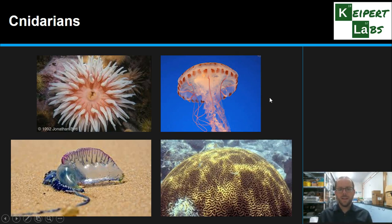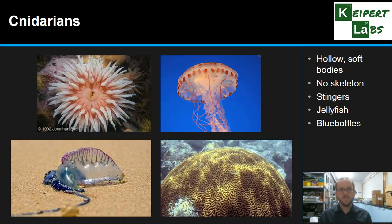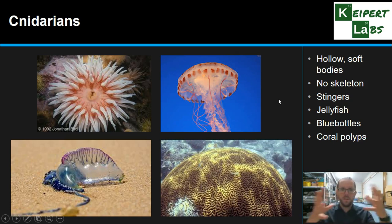Now we have cnidarians — the 'cn' is silent because it comes from the Greek word to sting, since members of this group often have stinging capabilities. They have hollow, soft bodies with no skeleton, but they do have the ability to sting. Things like jellyfish, anemones, and blue bottles have the capability to sting predators and protect themselves. Coral polyps, which make up structures like brain coral, are also cnidarians, though the coral structure itself is a mineral component — a combination of the living organism and a non-living part.